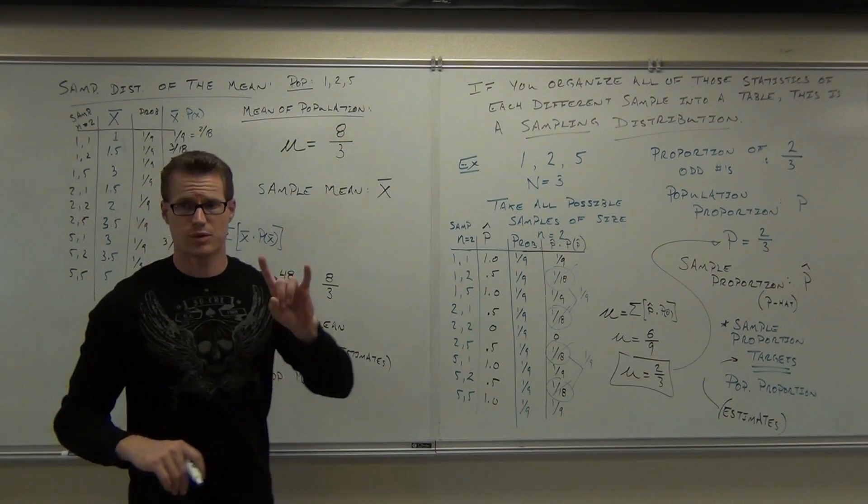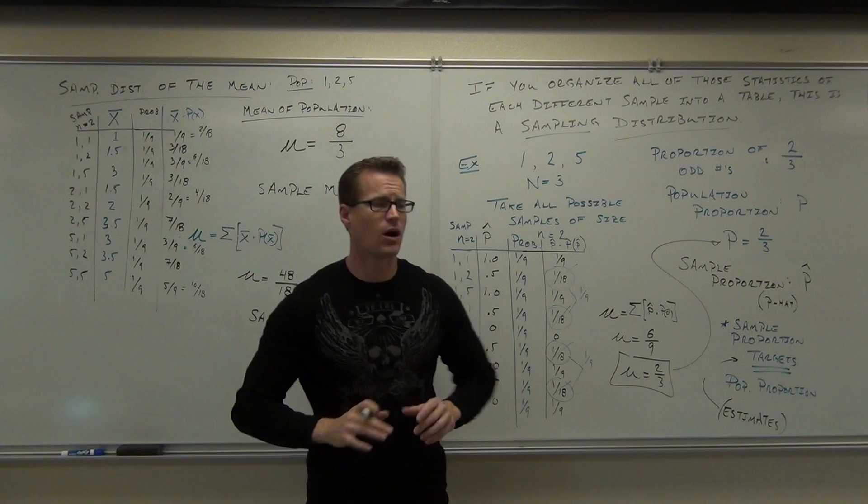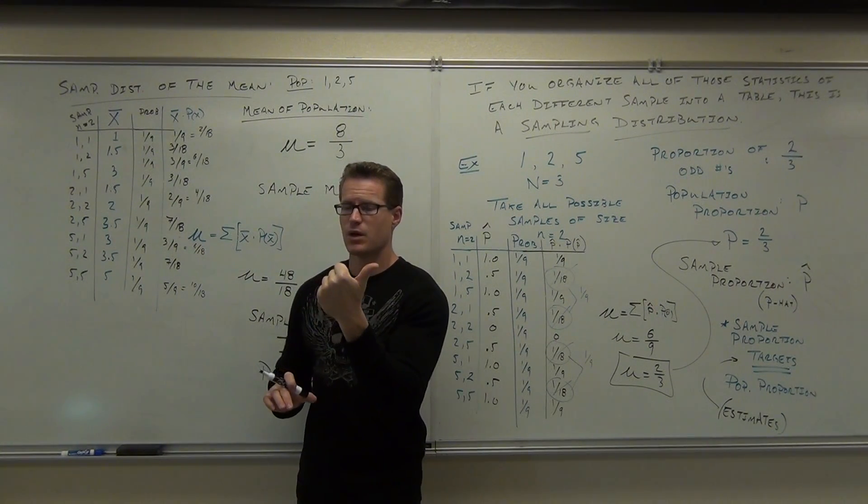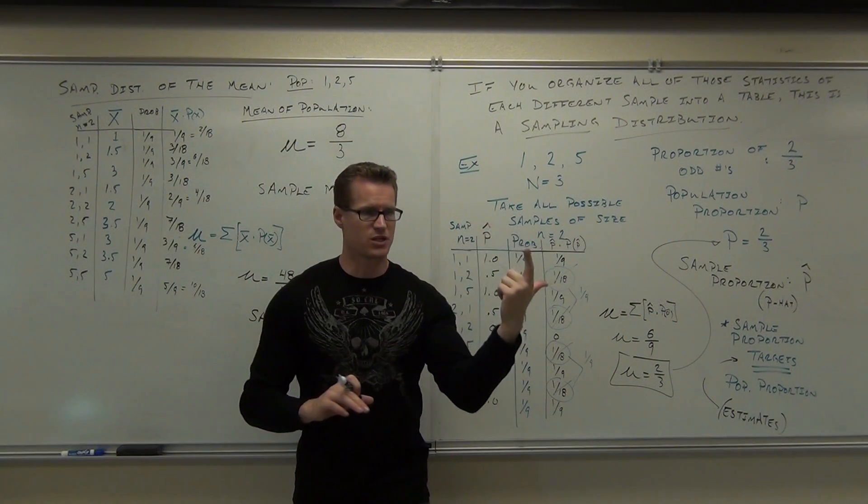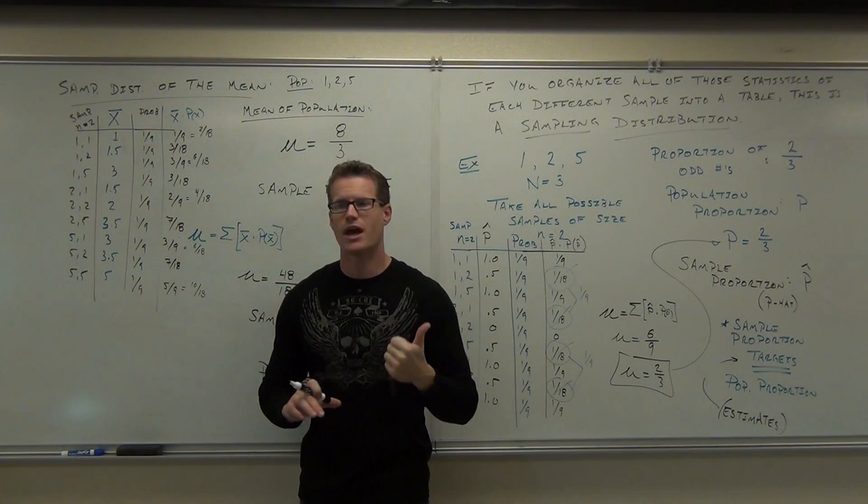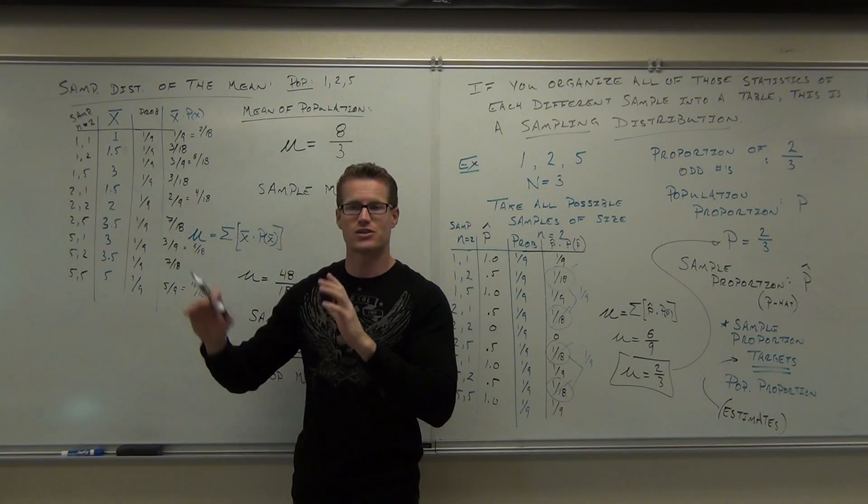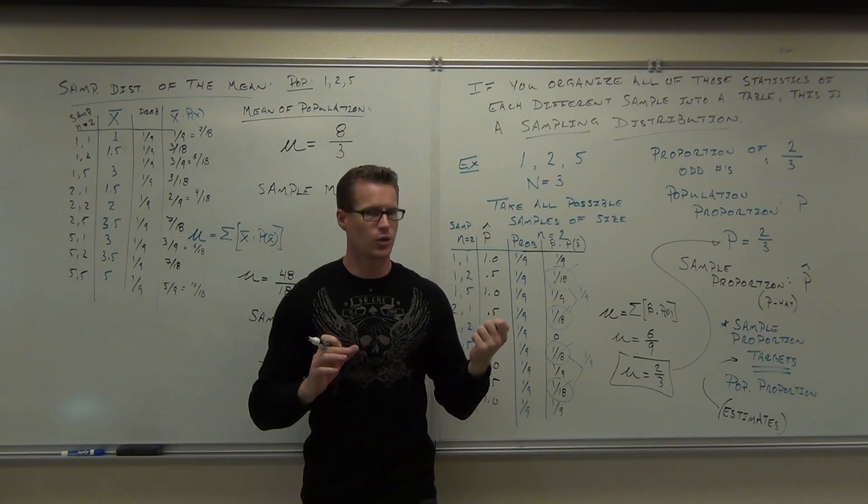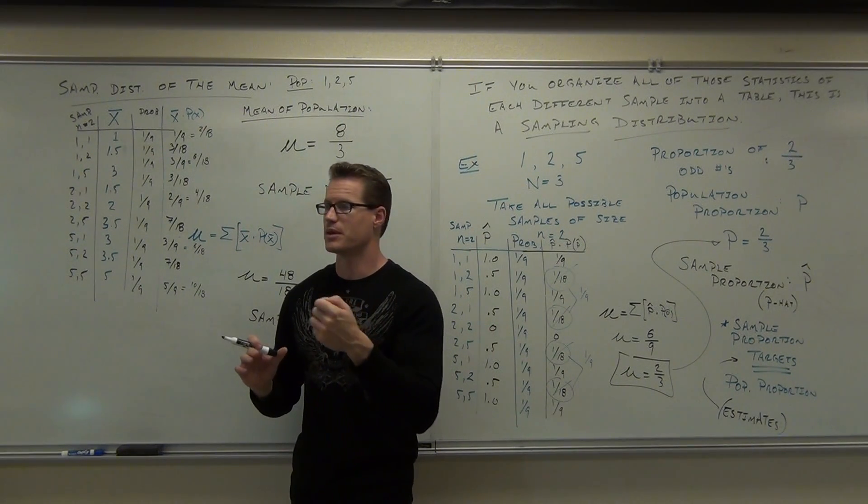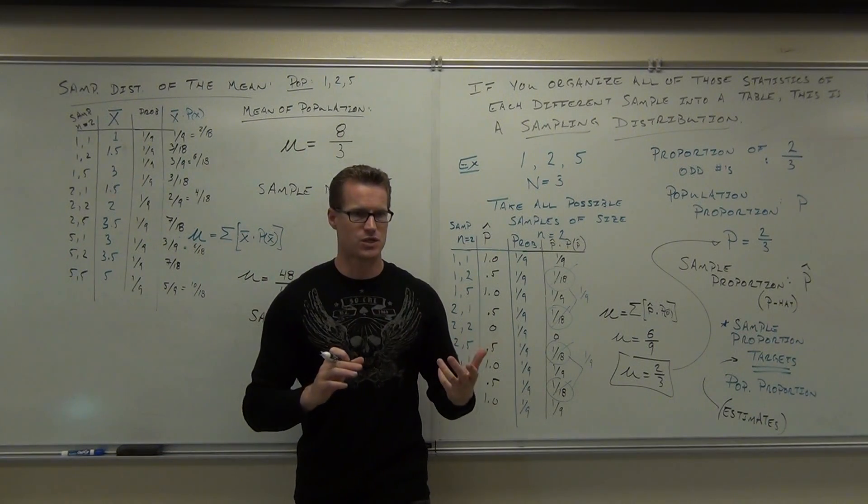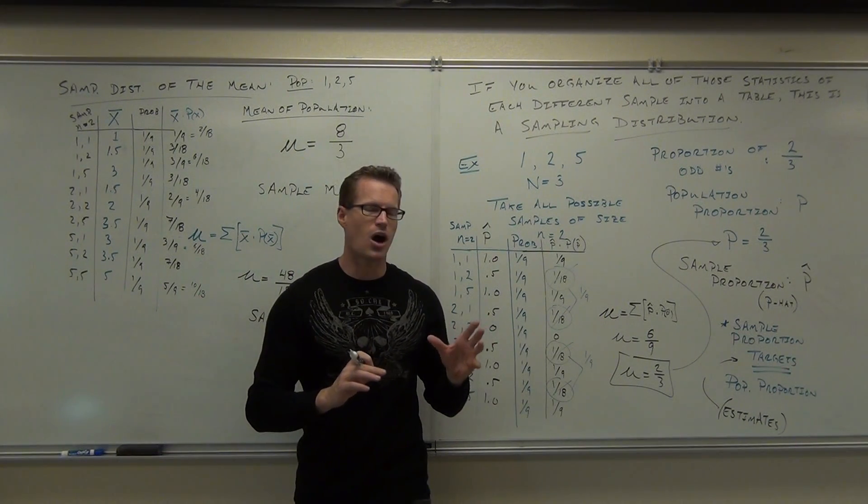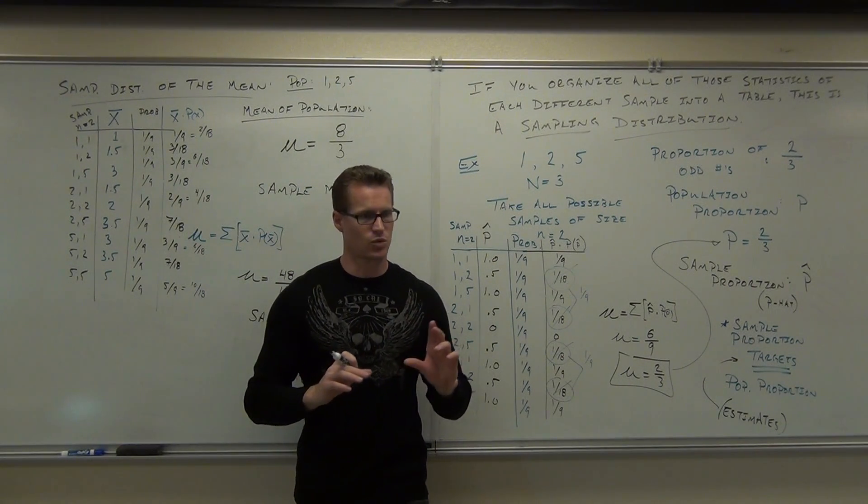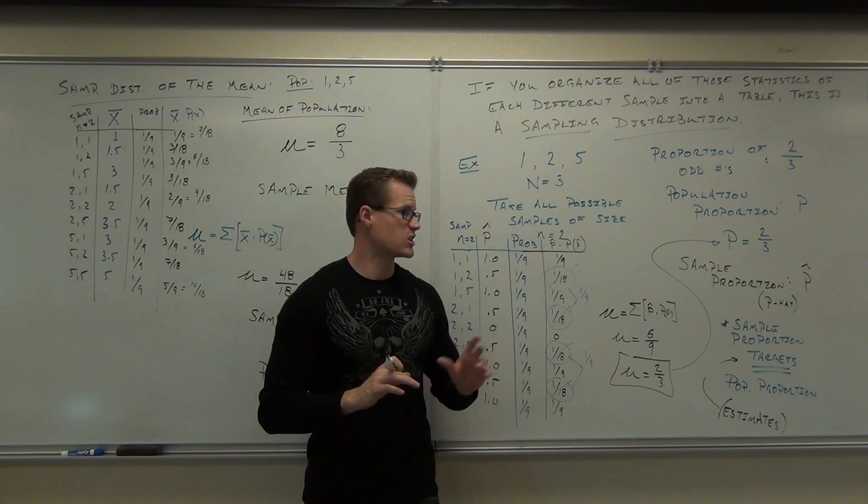What this says for us is that sample mean targets, or in other words estimates, population mean. So far we know two things. Sample proportion will be a good estimator for population proportion. Sample mean will be a good estimator for population mean. Sample variance will ultimately be a good estimator for population variance. The problem is standard deviation is actually not a great estimator for population standard deviation. It's systematically underestimated.